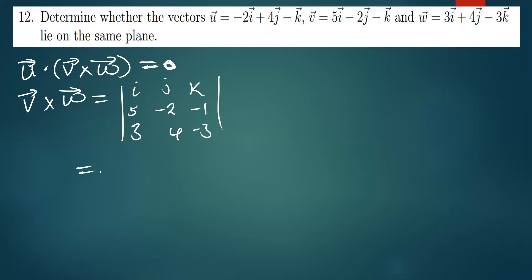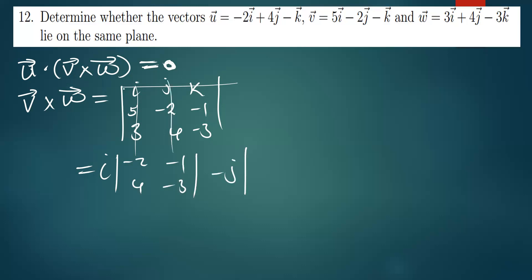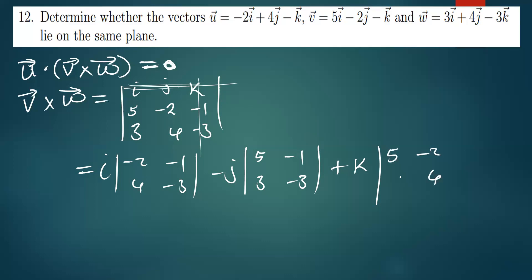For the cross product, we say i times the minor matrix — cancelling the first row and column, the remaining part is negative 2, negative 1, 4, negative 3 — then minus j times the minor, where the remaining part is 5, 3, negative 1, negative 3. For k we cancel accordingly and remain with 5, negative 2, 4, 3. Finding the determinants: for i we have (negative 2)(negative 3) minus (negative 1)(4), giving positive 6 minus negative 4.